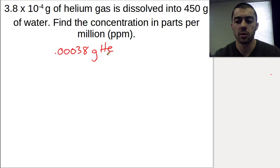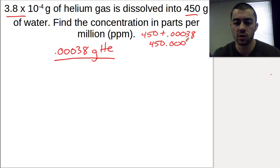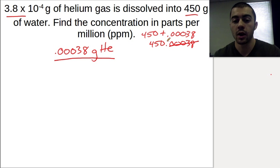The parts per million formula is mass of the solute divided by mass of the solution. We have mass of the solute divided by mass of the solution, which would technically be 450 plus this mass of helium we've added in. But realistically, if we add 450 plus 0.00038, we're going to have 450.00038. That's so close to 450. When you're doing parts per million, it's usually a small enough amount of solute that it's insignificant compared to the mass of the solution. So we can consider this negligible and divide by just 450 grams of solution.